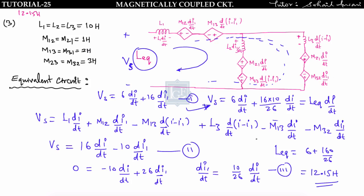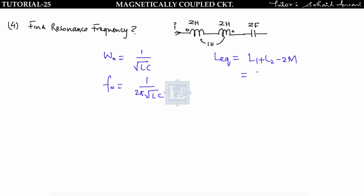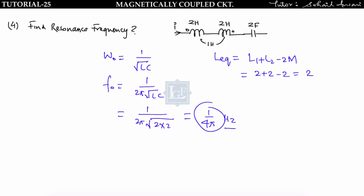In this way we can find L_equivalent of any magnetically coupled circuit — just draw the equivalent circuit and apply KVL. Problem four: find the resonance frequency. f_naught = 1/(2π√(LC)). Finding L_equivalent: current enters one dot and leaves the other, so L_equivalent = L1 + L2 − 2M = 2 + 2 − 2 = 2 H. With C = 2 F: f_naught = 1/(2π√(2×2)) = 1/(4π) Hz.